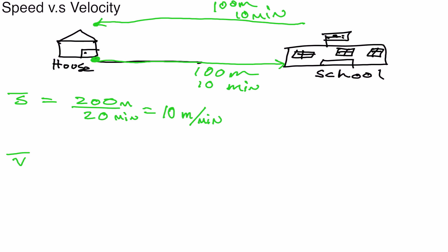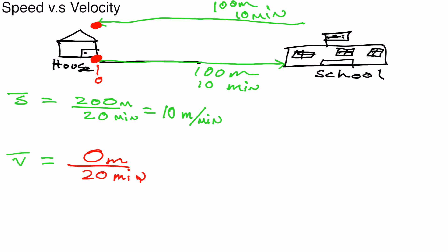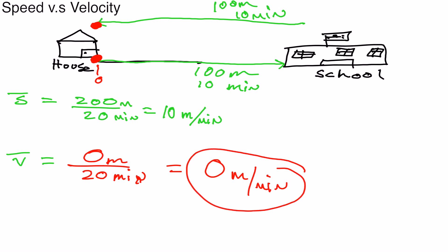Now for average velocity: displacement divided by total time. We started at home and ended at home, so our endpoint is the same as our starting point. That means displacement is zero. Zero meters divided by 20 minutes gives us an average velocity of zero meters per minute, while average speed was 10 meters per minute.